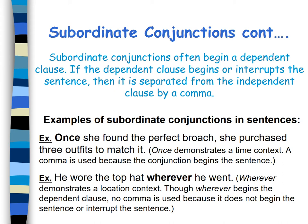Example 2: He wore the top hat wherever he went. 'Wherever' demonstrates a location context. Though 'wherever' begins the dependent clause, no comma is used because it doesn't begin or interrupt the sentence. 'He wore the top hat' is an independent clause that makes sense by itself, and 'wherever he went' is the dependent clause. If you start with the independent clause, you don't have to use a comma in between the two clauses.